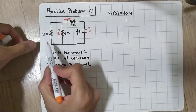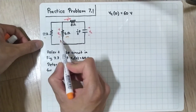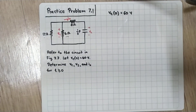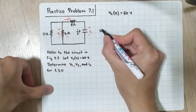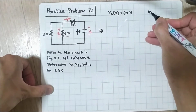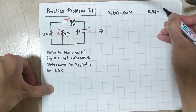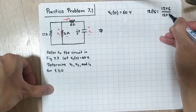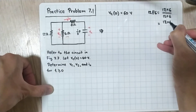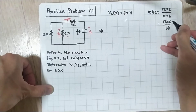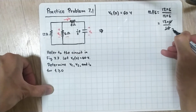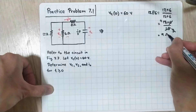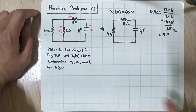Looking at the circuit, we have a 12Ω and 6Ω resistor both in parallel. We can redraw them as one equivalent resistor. The parallel combination is 12 multiplied by 6 divided by 12 plus 6, which equals 72 divided by 18. Simplifying gives us 4 ohms.